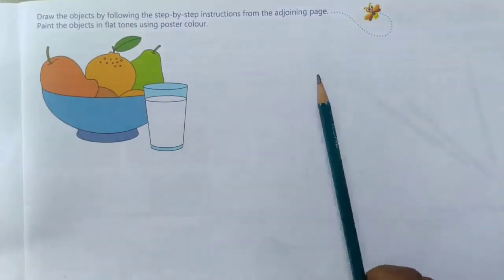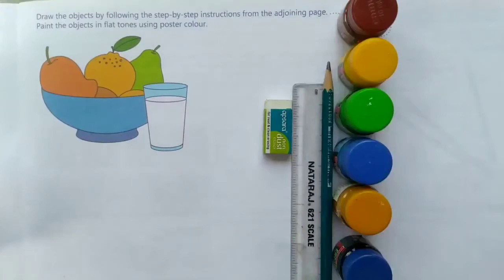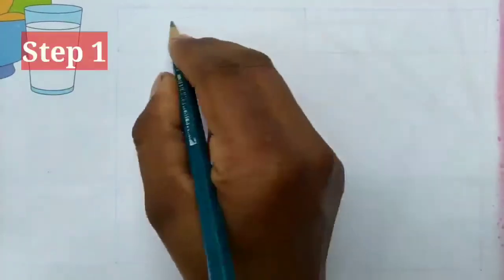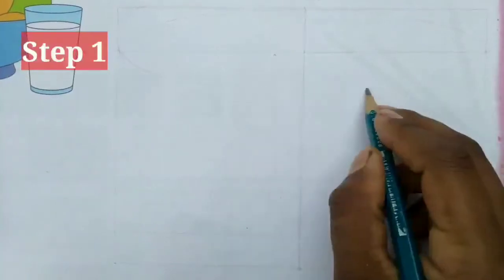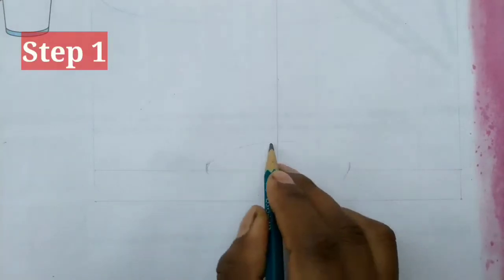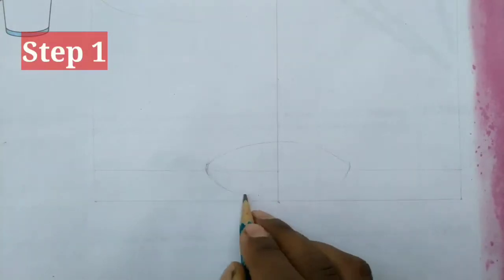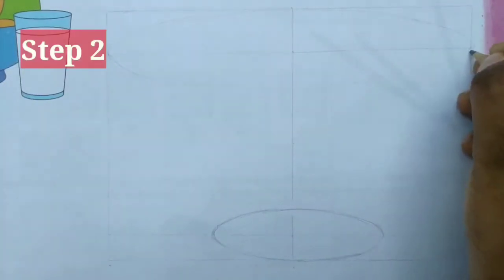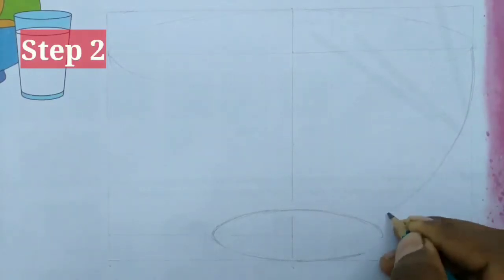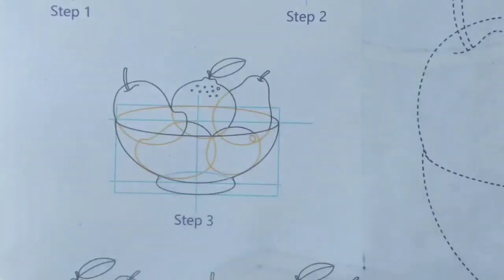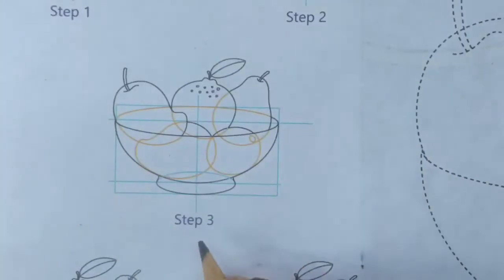For this you need one pencil, scale, eraser, and colors. Let's start step one. Then see page number eight, step number three, and try to draw.